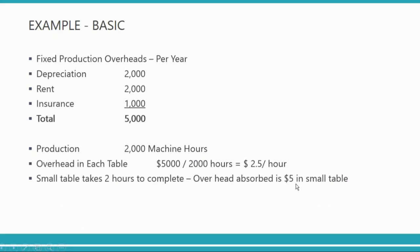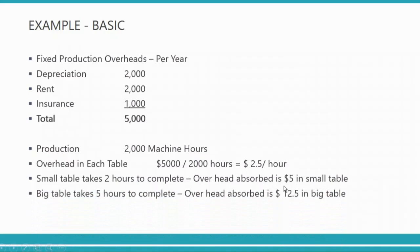For a big table taking five hours, five multiplied by 2.5 equals twelve point five dollars overhead per table. For a chair taking one hour, you add only two point five dollars. Usually we do not calculate OAR based on units; we calculate it based on machine hours, labor hours, square meters, and so on.